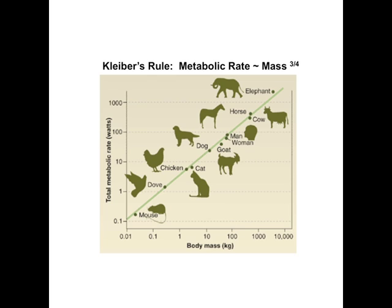He plotted the mass and metabolic rate for all these animals and they all lay on a straight line — a mouse down here, an elephant up here — and that straight line has a gradient of three-quarters. On a log scale, an equation with something raised to a power looks like a straight line where the power is the gradient. So this tells us that metabolic rate scales as mass raised to the power of three-quarters. This is Kleiber's rule.